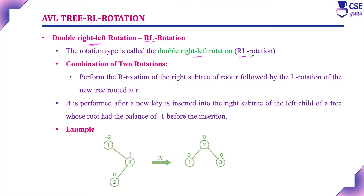Why do we need to perform rotation? An AVL tree is nothing but a balanced binary search tree, or height-balanced binary search tree. In an AVL tree we have to maintain a balance factor. If the balance factor is 0, +1, or -1, the tree is balanced. If it is +2 or -2, the tree is unbalanced. Whenever you are performing insertion into an AVL tree, the tree may become unbalanced, so the balance factor may become +2 or -2 after insertion.